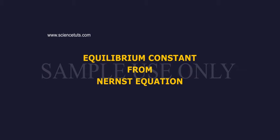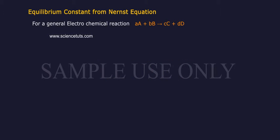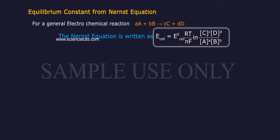Equilibrium Constant from Nernst Equation. For a general electrochemical reaction, aA plus bB gives cC plus dD. The Nernst Equation is written as E-cell equals E-naught cell minus RT by NF.